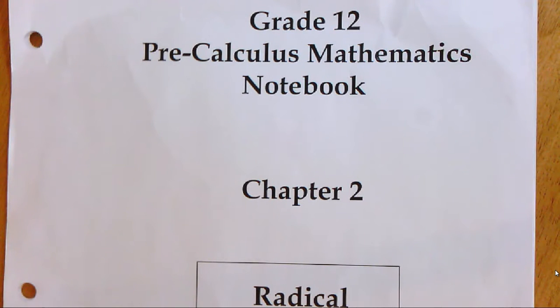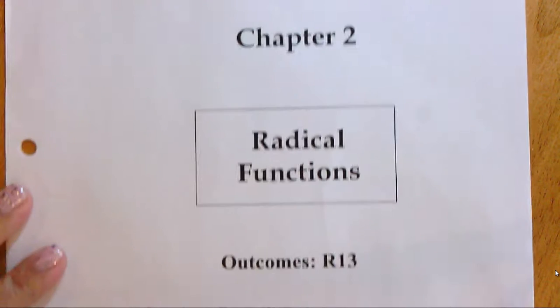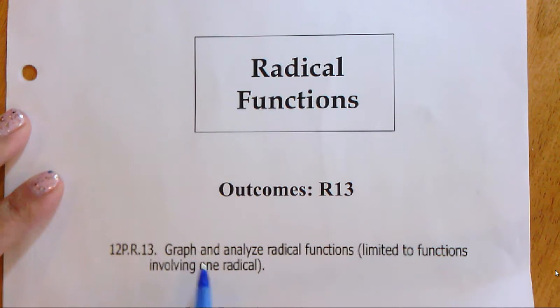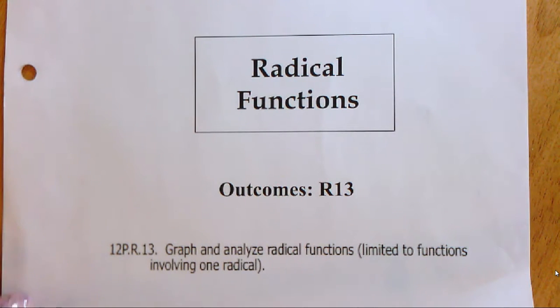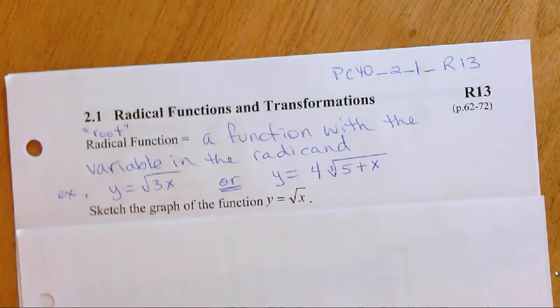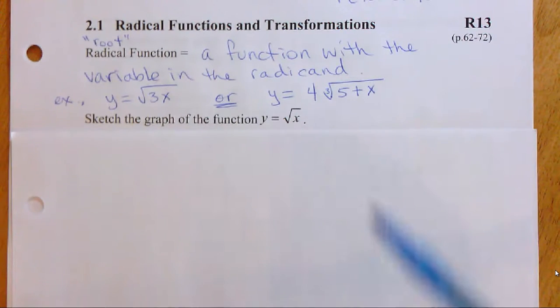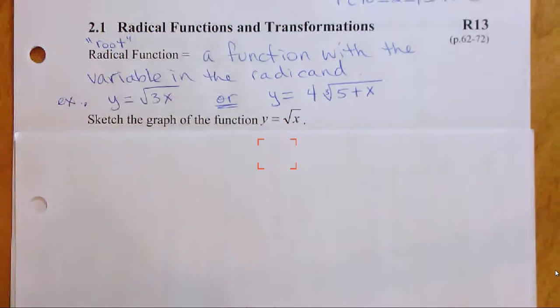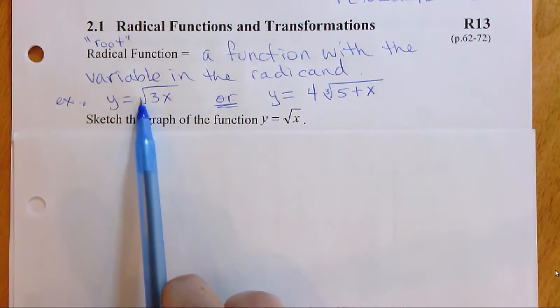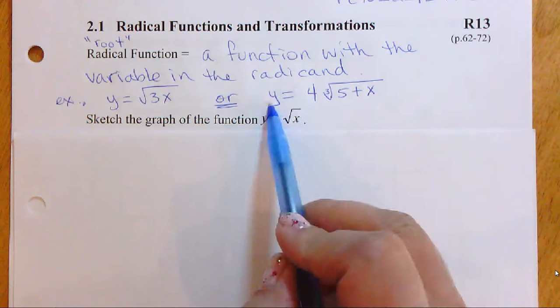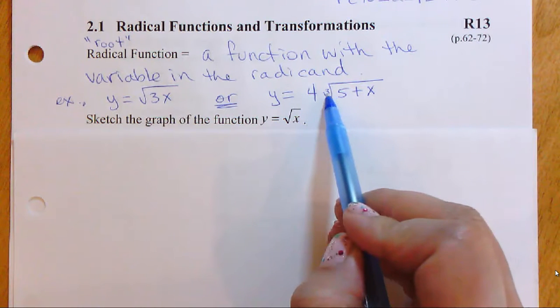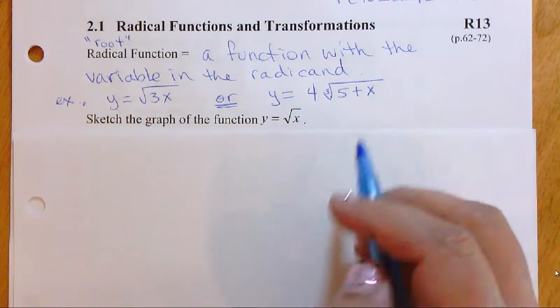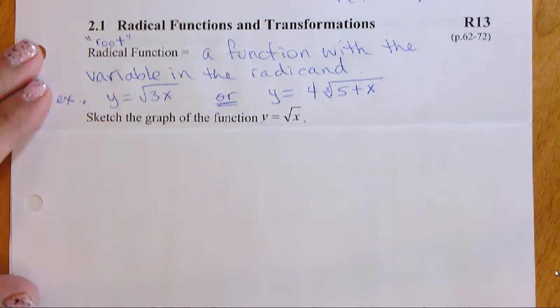Hi folks, welcome to chapter 2. We're going to look at radical functions. This is outcome R13, and we're going to graph and analyze radical functions. It's going to be limited to functions involving only one radical. Radical functions are of the root variety — things that have a square root symbol with a variable underneath, or something like y equals four times the cube root of five plus x. First, we're going to introduce our parent function.